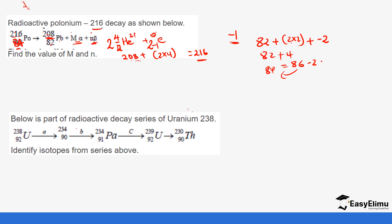Below is a part of a radioactive decay series of uranium-238. It undergoes alpha decay to form thorium-234 with atomic number 90, then a beta decay, and then another decay to form uranium-239. We need to identify isotopes — compounds that have the same atomic number but different mass numbers.